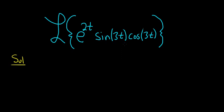So whenever you see a sine and a cosine like this, you want to think about the identity sine 2x equals 2 sine x cosine x.